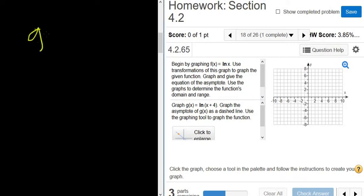In this problem, we have to graph g of x equals ln x plus 4. So this is the graph of the natural log shifted to the left by 4. So left 4.